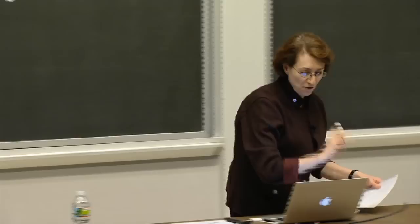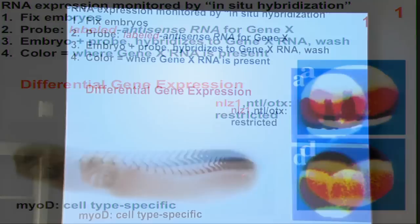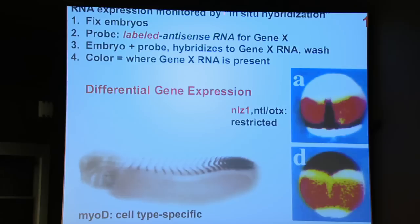Here's a great slide showing the expression patterns of two different genes in the whole organism. Gene myoD is cell type-specific — it's just expressed in chevron-shaped structures, which are the developing skeletal muscles. Other genes are expressed in large regions of the developing animal. The colors indicate where the RNA for each gene is found, using a technique called in situ hybridization.